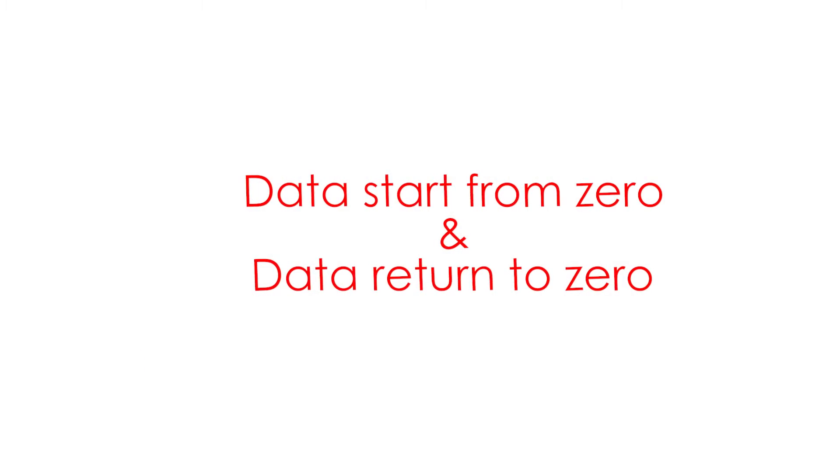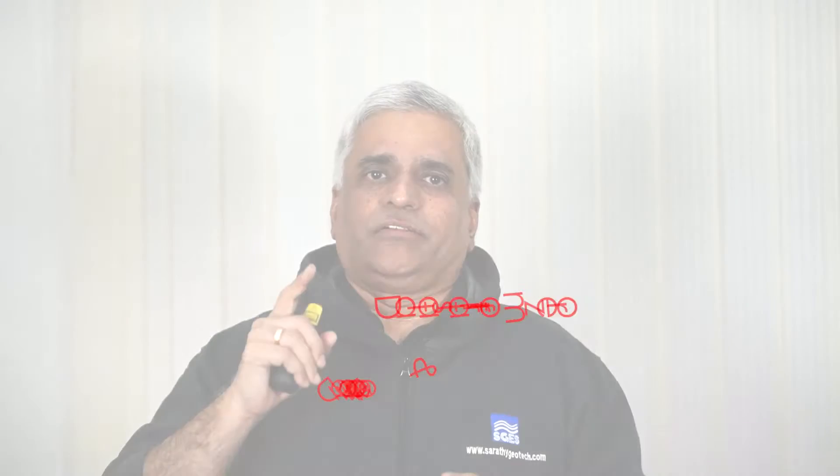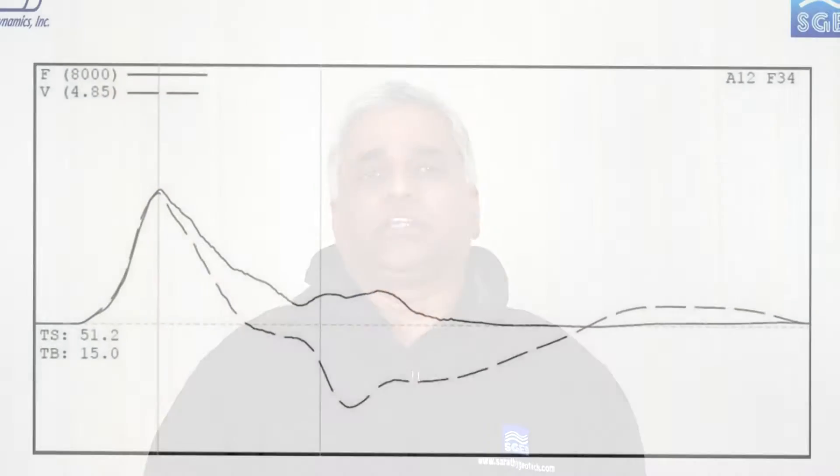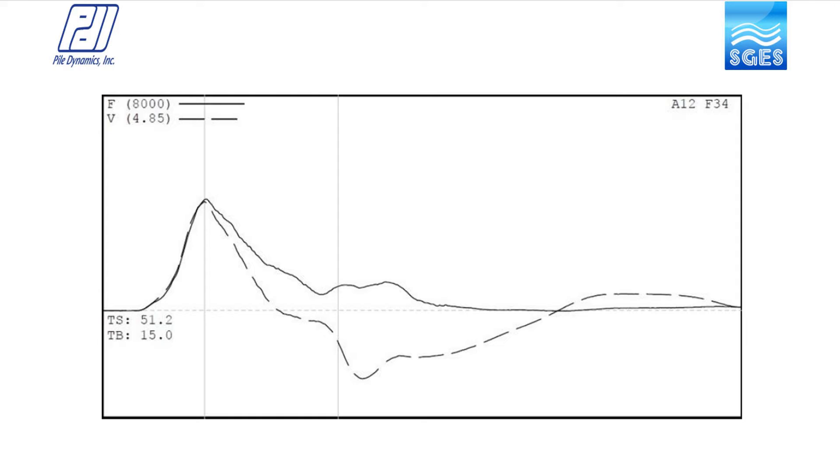When you drop the dead weight on top of the pile, the force-velocity time history is captured on the Pile Driving Analyzer. To evaluate the quality of the data, you should ensure that the data starts from zero and returns to zero. There will be proportionality between force and velocity at the first peak. The data you see on the screen has excellent proportionality, starting from zero and ending at zero — this data is qualified as good data.